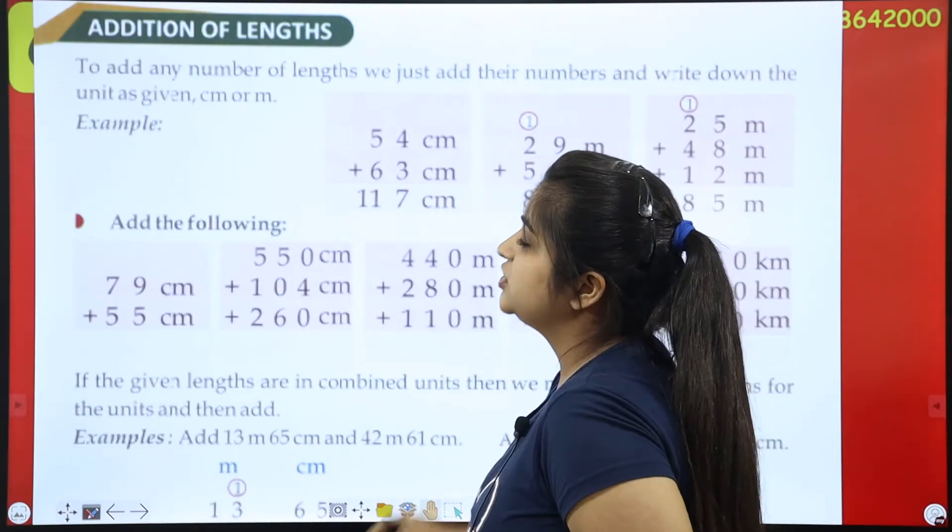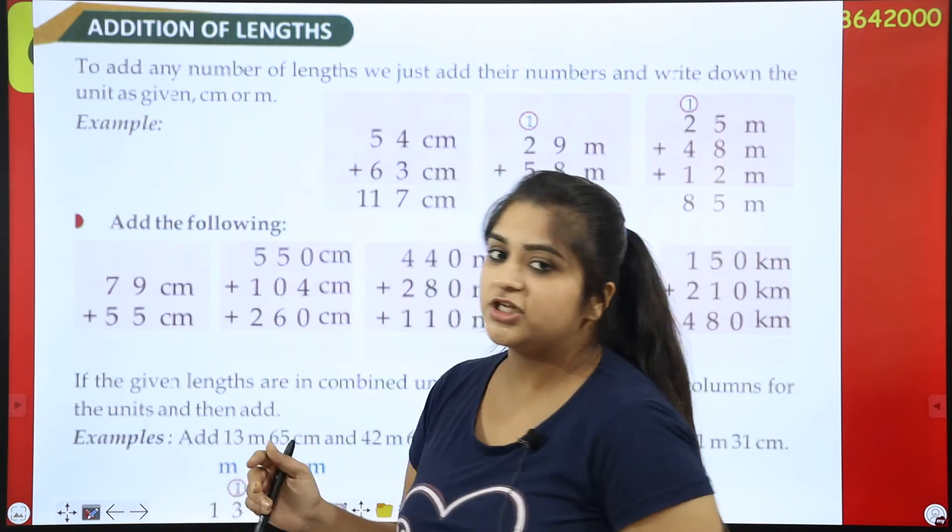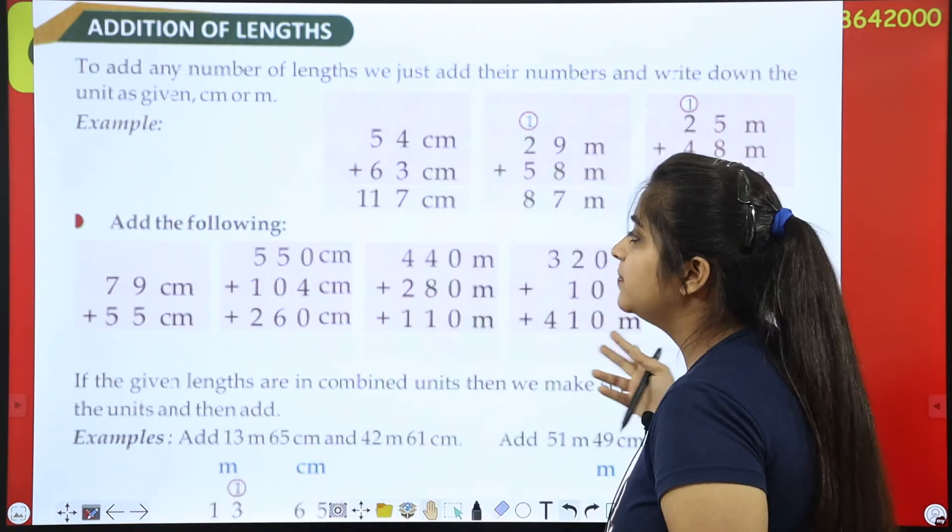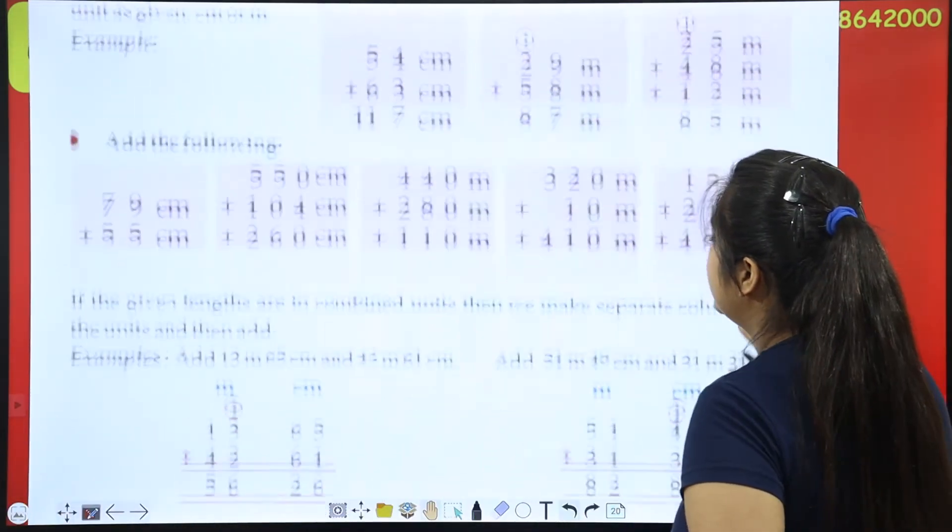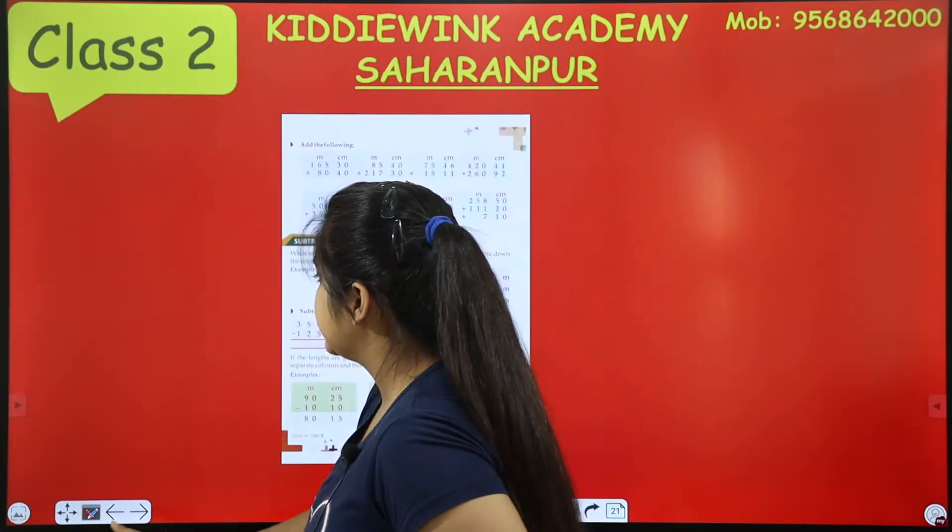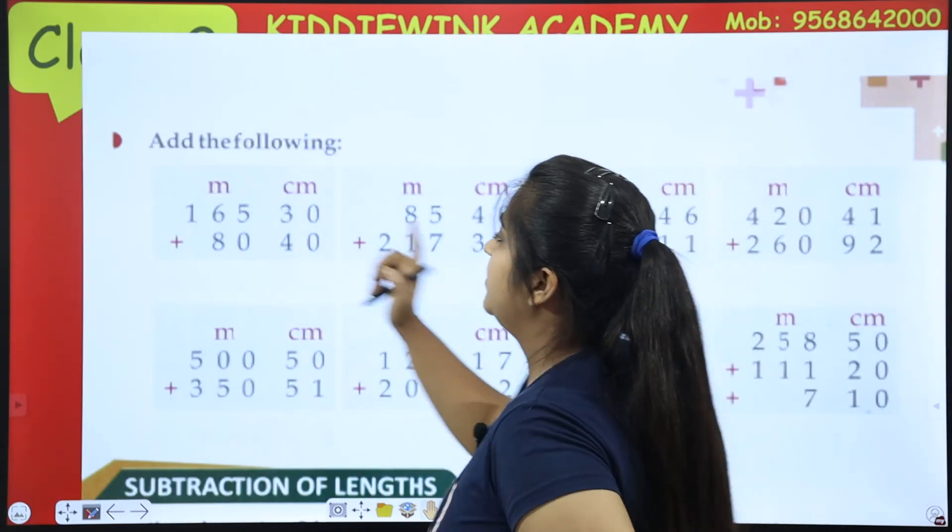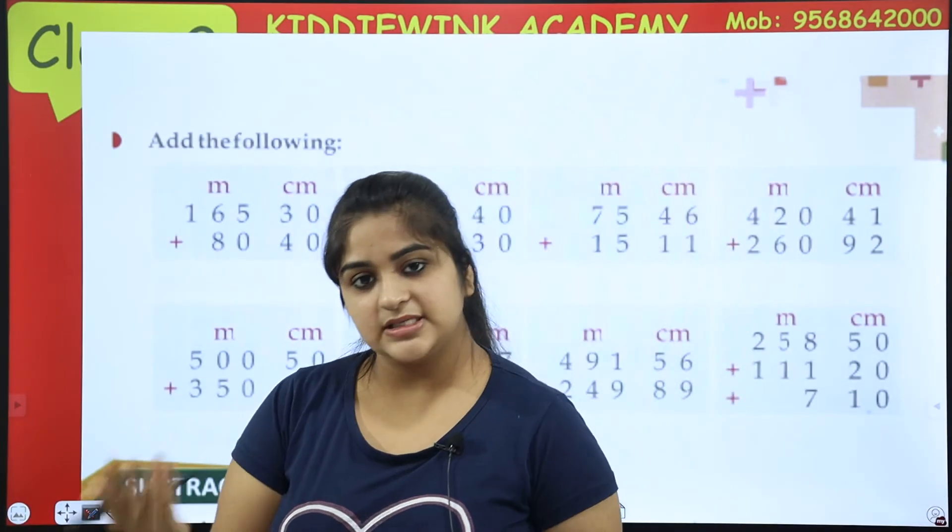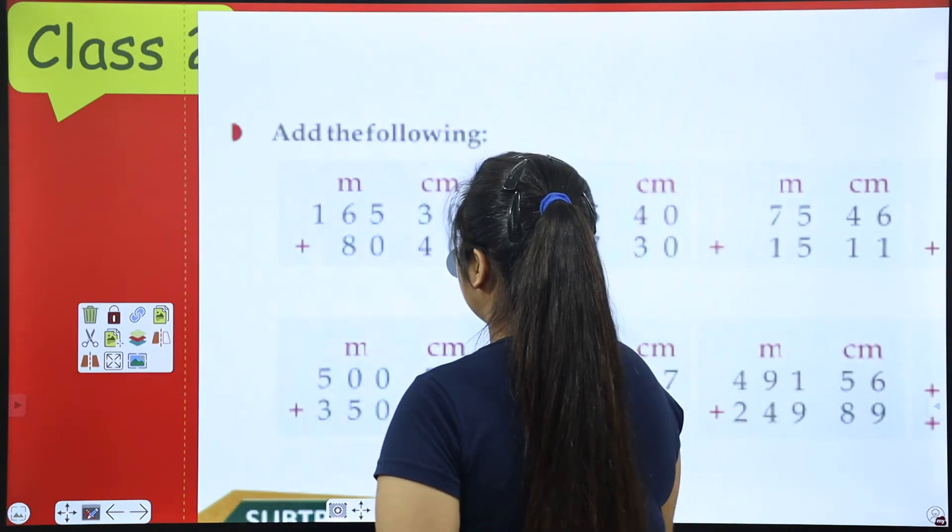Now, addition of length. Like we had done in rupees chapter, this is a simple addition. If you have written a meter, then you have to write a meter down. If you have written a centimeter, then you have to write a centimeter down. Like this, we can see an example. Here, we will see an example on the next page. We have written a meter, either a centimeter. We don't need any difference. We have to sum the normal sum. Okay, then we do it.